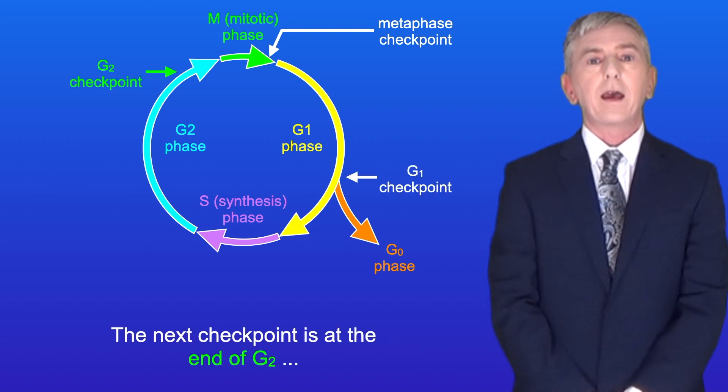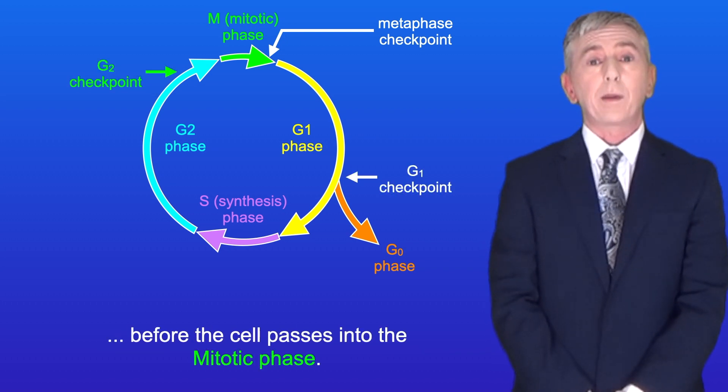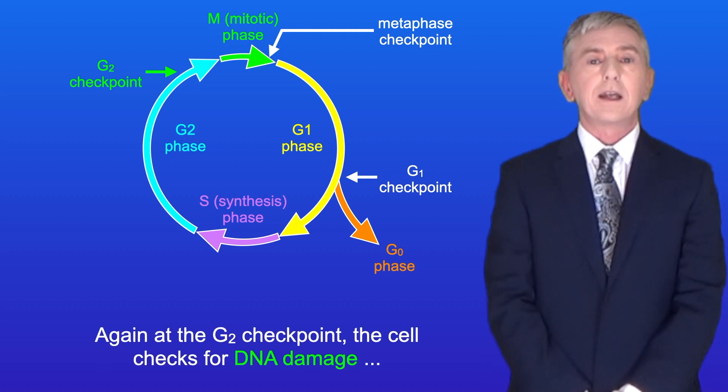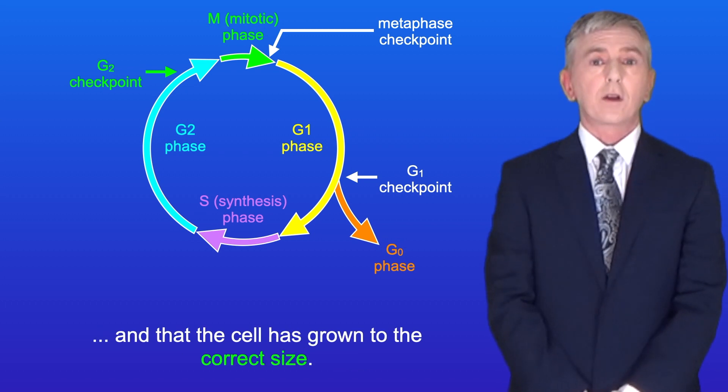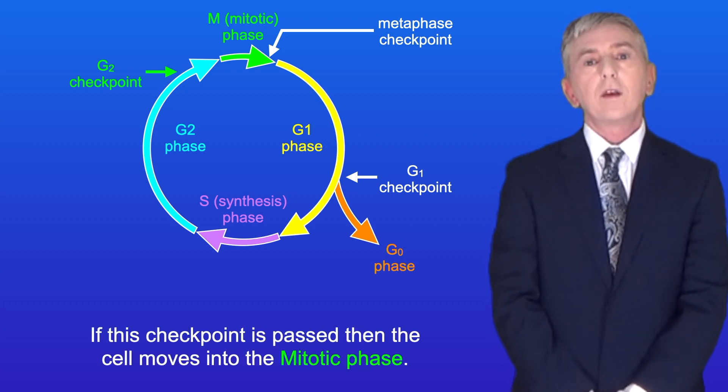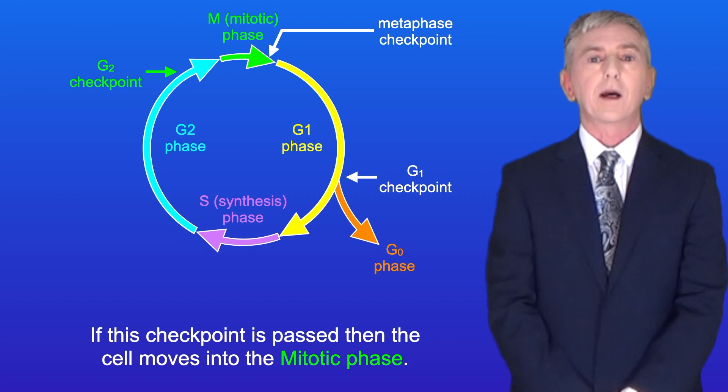The next checkpoint is at the end of G2 before the cell passes into the mitotic phase. Again at the G2 checkpoint the cell checks for DNA damage and that the cell has grown to the correct size. If this checkpoint is passed then the cell moves into the mitotic phase.